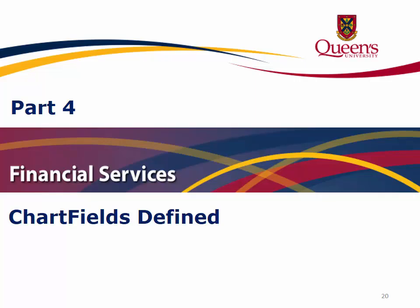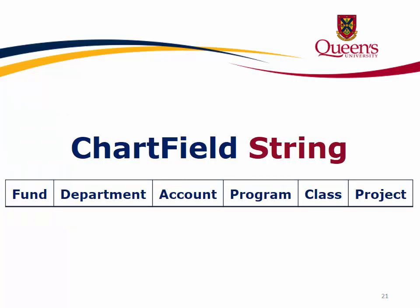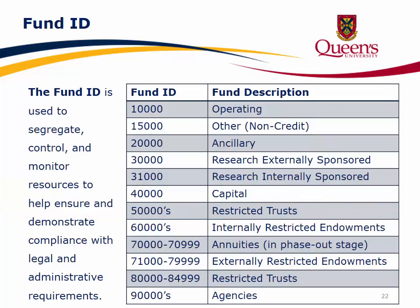Part 4: Chartfields Defined. A typical chartfield string may include up to six chartfields: Fund, Department, Account, Program, Class, and/or a Project. The Fund ID is used to segregate, control, and monitor resources to help ensure and demonstrate compliance with legal and administrative requirements.